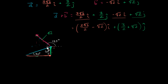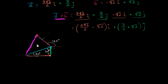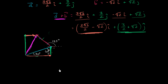The vector that we care about, a plus b, is this vector right over here. We start at the tail of a, go to the head of a, and then place the tail of b there — and where the head of b is, that's going to be the head of a plus b. We can think of its horizontal and vertical components: its vertical component is this vector right over here, and its horizontal component is this vector right over there.